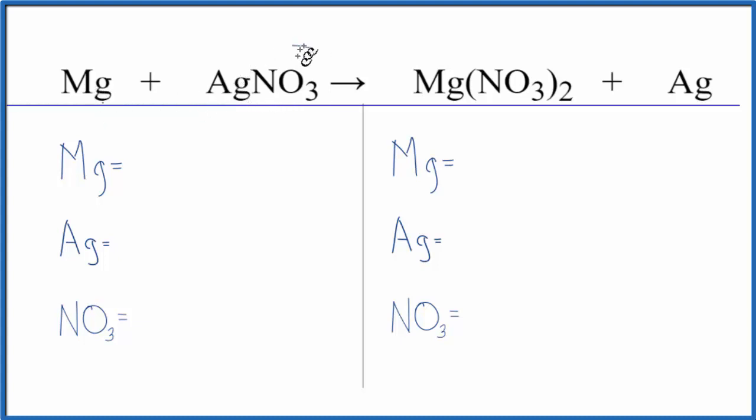The Mg pushes the silver out, so the silver is by itself, then the Mg is with the NO3. Single replacement.